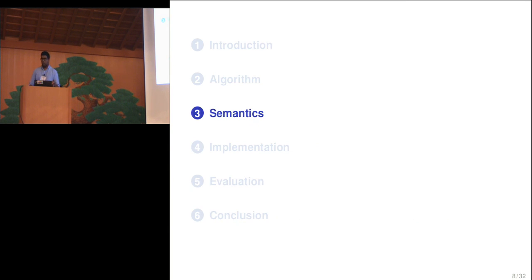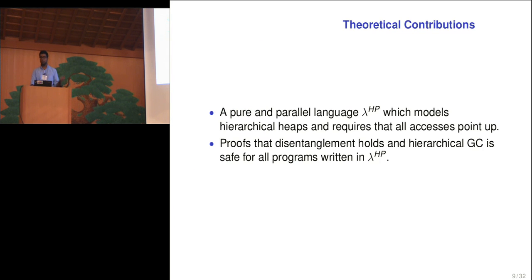So hopefully by now I've illustrated the kind of algorithm that we're going for. But I've focused on a very particular example, Quicksort. This particular example of Quicksort. Do we know whether this works for a more general case? And in order to do that, we developed a semantics. We developed a pure and parallel language lambda HP, which models hierarchical heaps and requires that all axes go up. And in the semantics, we prove that disentanglement and the memory safety of hierarchical GC is true for all programs written in this language.